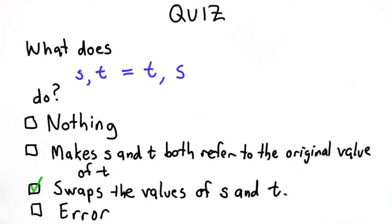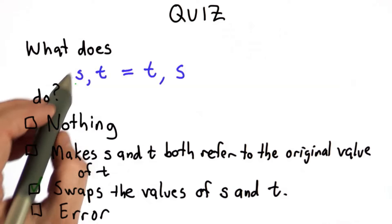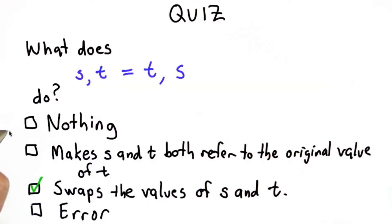And the important reason for that is both of the values on the right side get evaluated first, to get turned into their values, before we do any of the assignments.